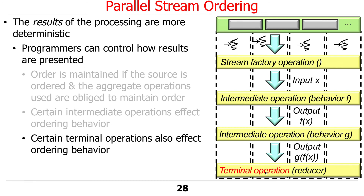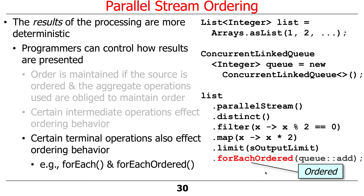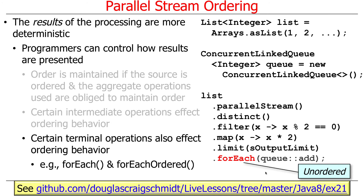Certain terminal operations also affect ordering behavior and, by extension, the performance of the ordering. Here are two examples: forEach and forEachOrdered. forEach is unordered — it simply runs without trying to order the output in any way. In contrast, forEachOrdered, as the name implies, will make sure to keep the output ordered in encounter order. So if we have a list, forEachOrdered gives it back in order, whereas forEach will just do it however it feels like. If you run the experiment — sometimes you have to run it more than once because it's not deterministic — you'll see it behaves differently and is faster with forEach.